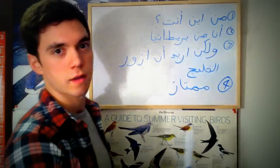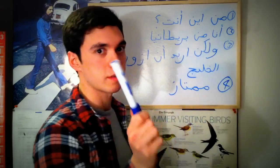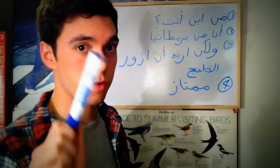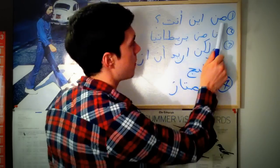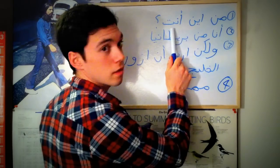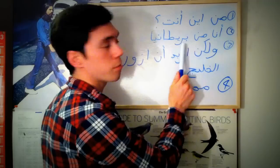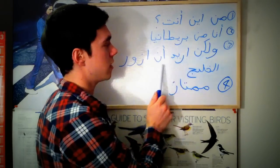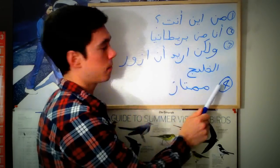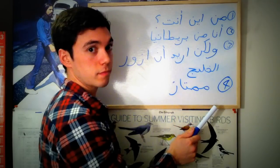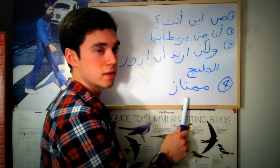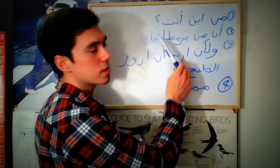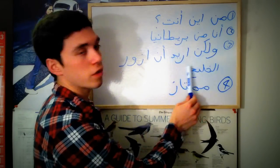Okay, one more time — they say: min-wein-inta? Ana min britaniya. Walakin urid an azur il khaleej. Mumtaz! I'm not saying you're speaking Arabic fluently, but: min-wein-inta? Ana min britaniya, walakin...